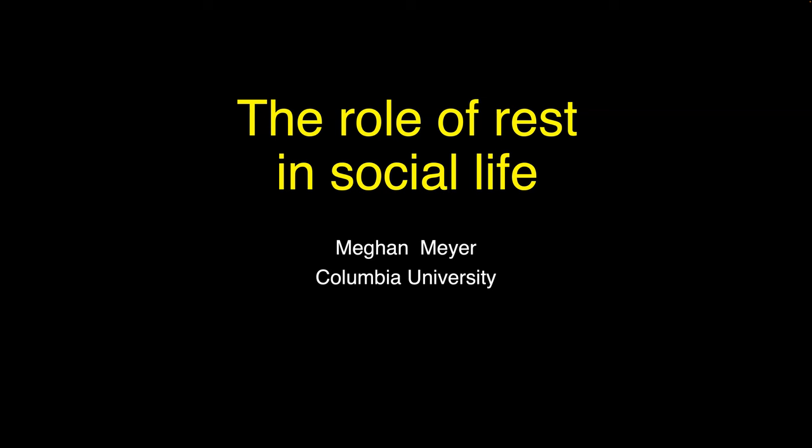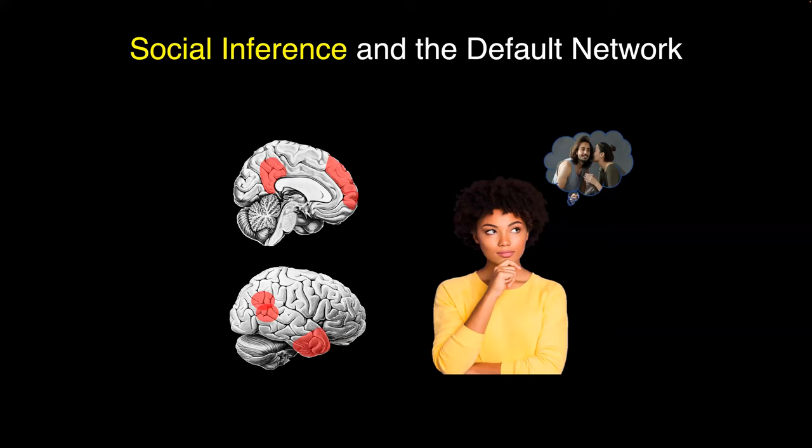All of us in the room today are here because we're interested in social interaction, which means that we likely care about this brain system shown here. It's often referred to as the default network. The reason why we likely care about it, or I would say should care about it, is because the social neuroscience literature has really consistently implicated this network in social inference — the process of trying to interpret what someone is thinking, feeling, their intentions, their personality traits, or social motifs as Eshin might say. You would think that it's really key to everyday social interaction.